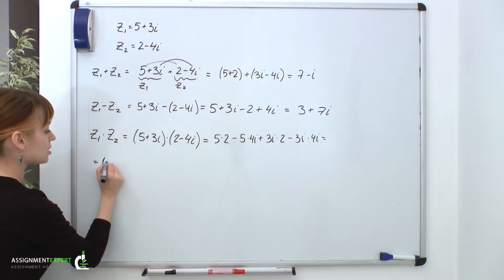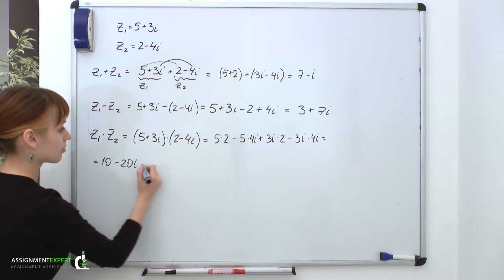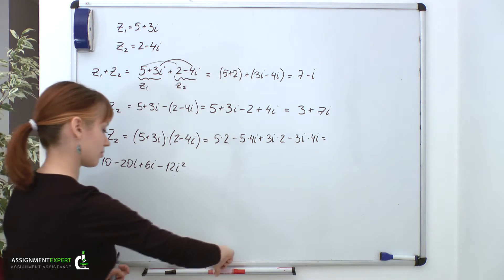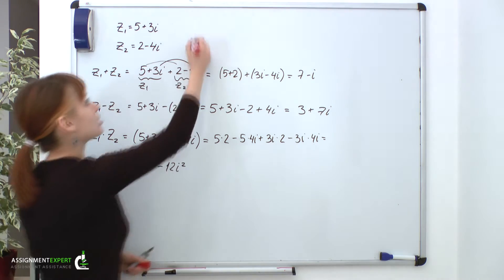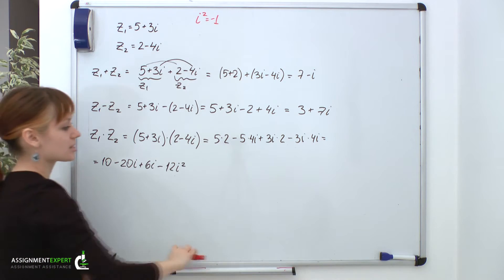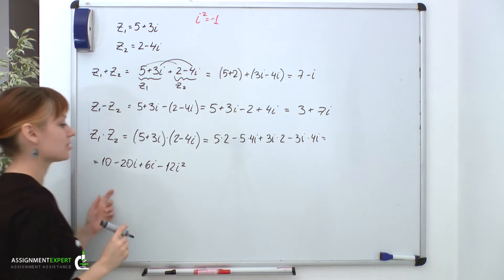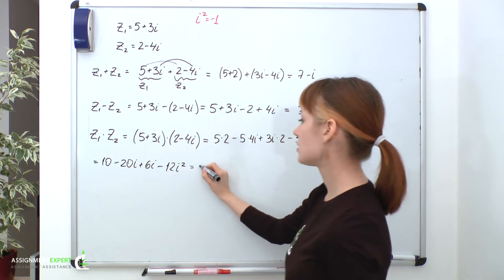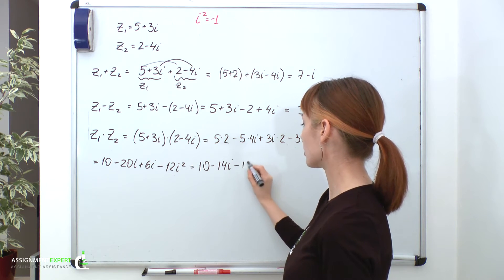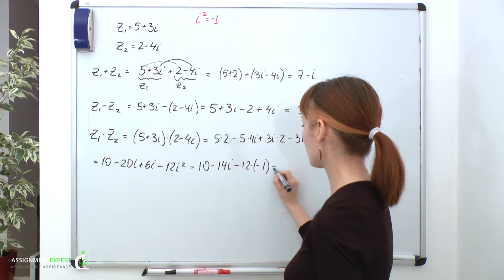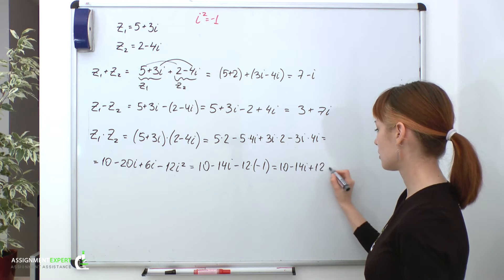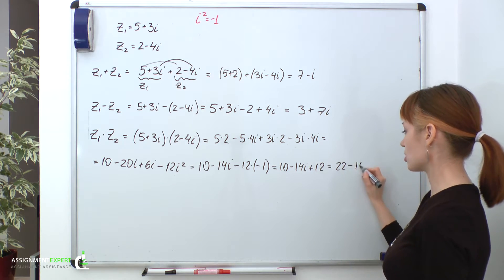That is equal to 10 minus 20i plus 6i minus 12i squared. But we'll remember that i squared is actually equal to negative 1. Now, we can substitute that negative 1 into our expression and obtain the following: 10 minus 14i minus 12 times negative 1, which equals 10 minus 14i plus 12, which is equal to 22 minus 14i.